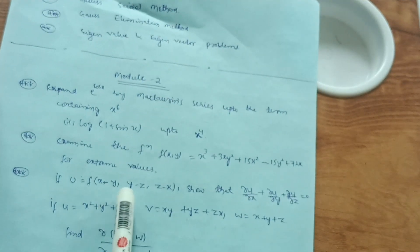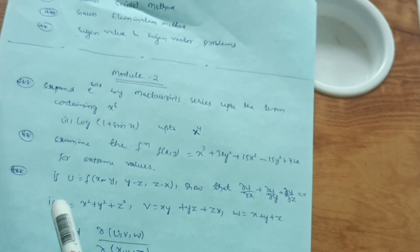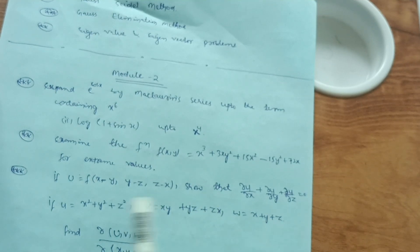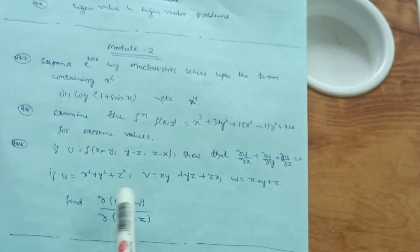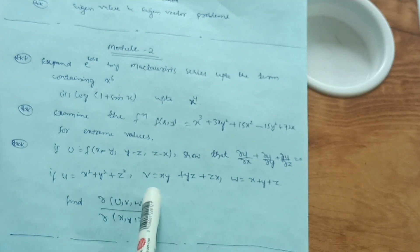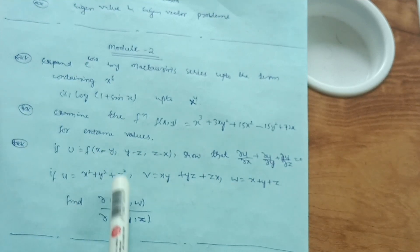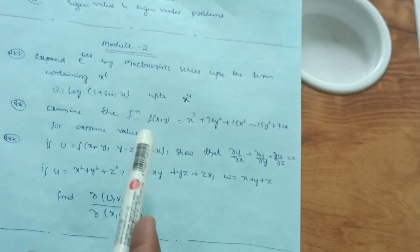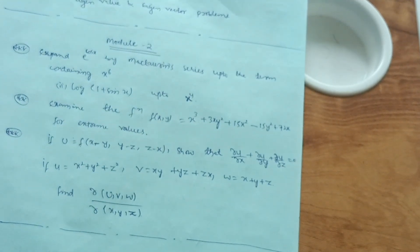Next, if u = f(x−y, y−z, z−x), show that ∂u/∂x + ∂u/∂y + ∂u/∂z = 0. Also, if u = x² + y² + z², v = xy + yz + zx, w = x + y + z, find the Jacobian ∂(u,v,w)/∂(x,y,z). These are important show-that and Jacobian problems. For Module 2, focusing on Maclaurin series and extreme values (maxima/minima) is enough to cover this module.